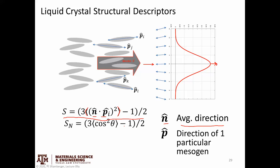So we're looking for the average of cosine squared theta, where theta is the angle between one particular mesogen and the average direction. Let's put some real numbers in. If the system is totally aligned, the average angle theta is zero. The cosine squared of zero is one. In a perfectly aligned system that term is one, so we have (3×1 − 1)/2, which gives the order parameter equal to one.